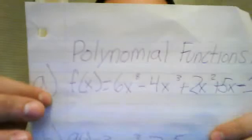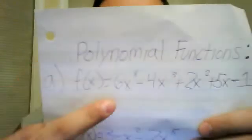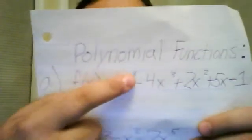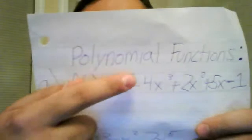To find the end behavior, you can find the number with the highest exponent. In this case, it's 8 here from the 6x to the 8th.